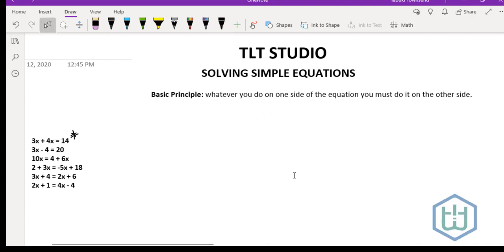The first equation we're going to look at is 3x plus 4x equals 14. When you're doing an equation and you see that the variables are the same, you can just go ahead and add the values. So this would be 7x equals 14. Now to get x by itself, we will have to divide by 7.